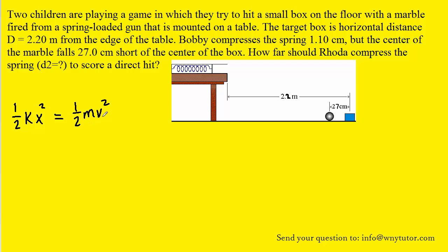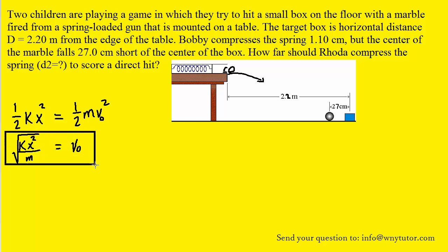This equation can be easily rearranged to solve for the velocity — let's actually call it the initial velocity, because that's going to be the velocity of the marble as it's flying off the edge of the table. So let's rearrange this equation and solve for v-naught. We can go ahead and put a box around that equation because we're going to need it later.